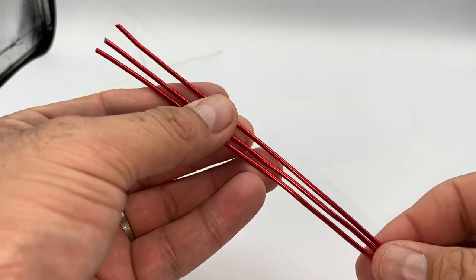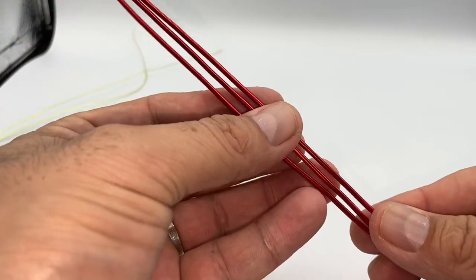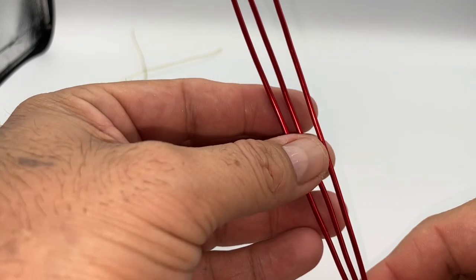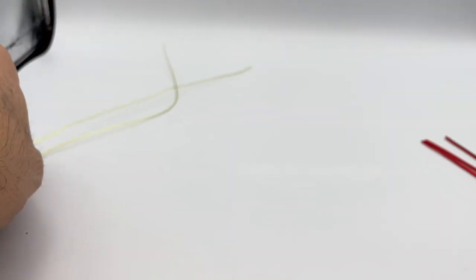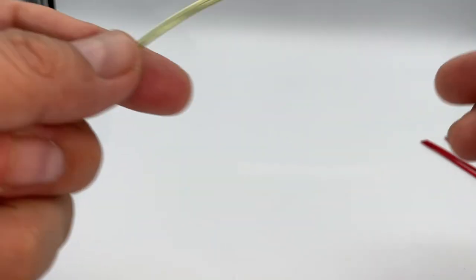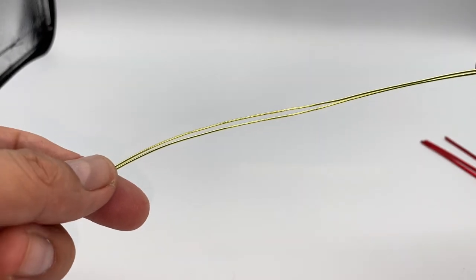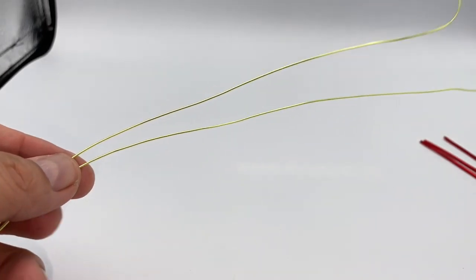Okay, so I'm going to be using this thick wire for the demonstration and I'm going to use a different color wire for the weaving technique. This is a 22 gauge aluminum wire.